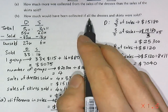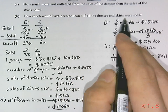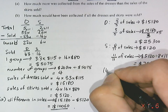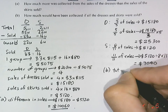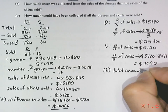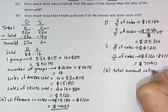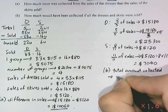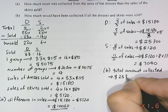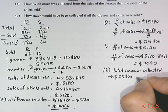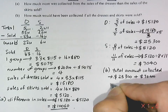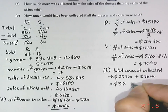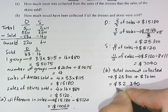If everything — dresses and skirts — were sold together, the total amount collected would have been twenty-five thousand three hundred dollars plus seven thousand and forty dollars, giving a grand total of thirty-two thousand three hundred and forty dollars.